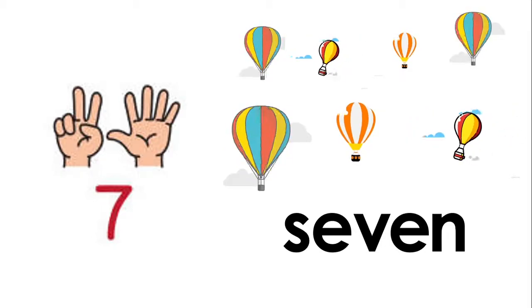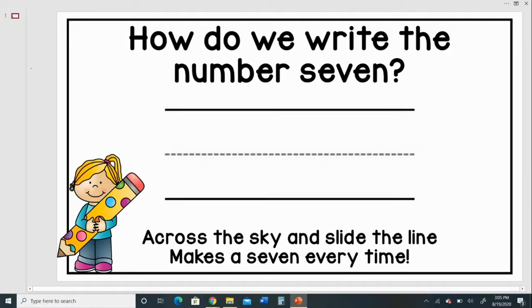Now how do we write it? How do we write the number 7? Across the sky and slide the line makes a 7 every time. Let's try that again. Across the sky and slide the line makes a 7 every time. Let's see if you can say it this time.